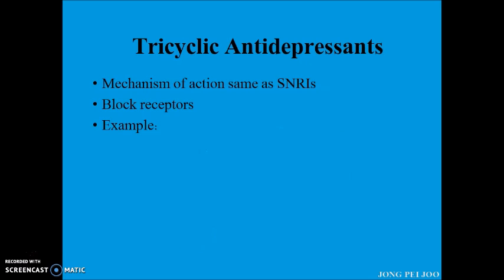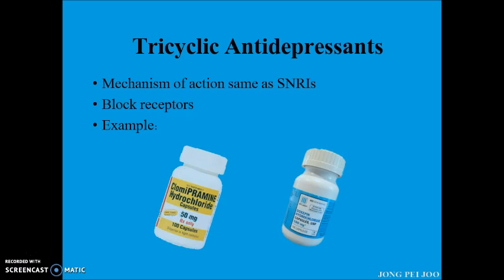Tricyclic antidepressants treat depression by the same mechanism as SNRI. They also block adrenergic, alpha-adrenergic, histaminic, and muscarinic receptors. Examples of drugs under this category are clomipramine and doxepin.